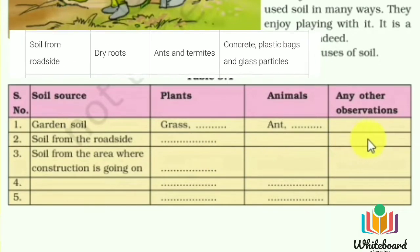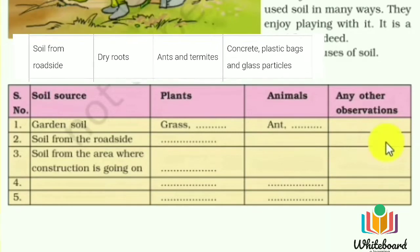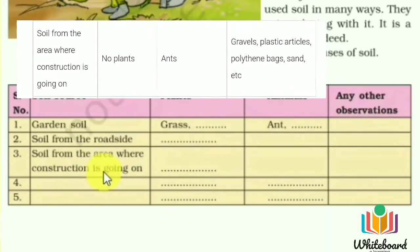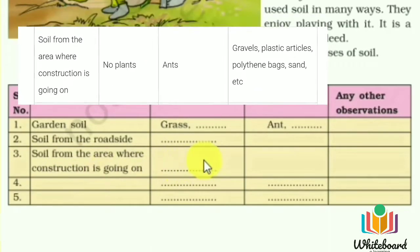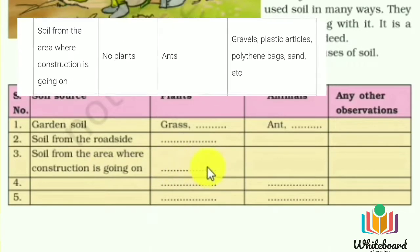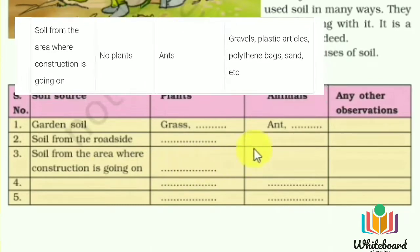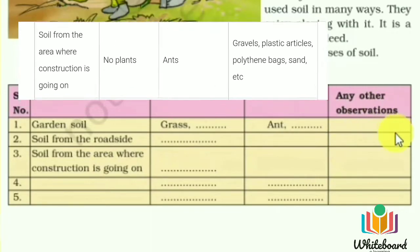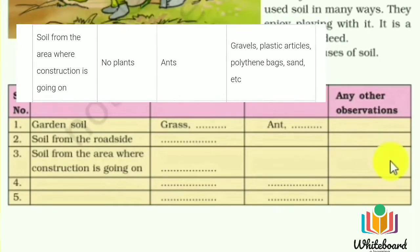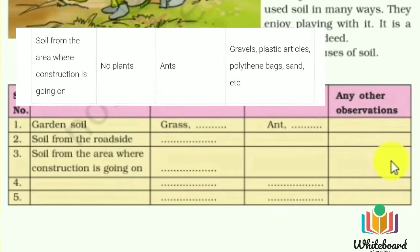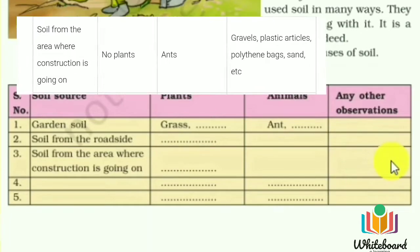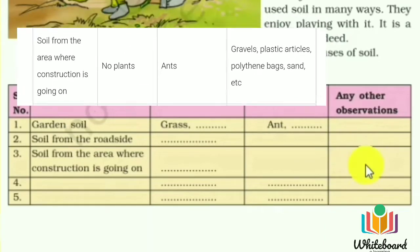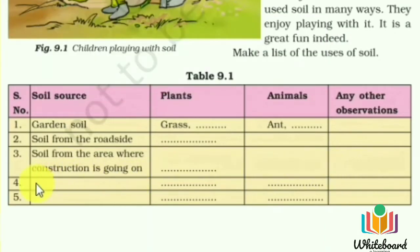Number 3 — Soil from an area where construction is going on: you can hardly find any plant here, so write 'no plant.' Animals: ants can be found. Other observations: gravel, plastic particles, polythene bags, sand, stones, and broken brick parts are available.